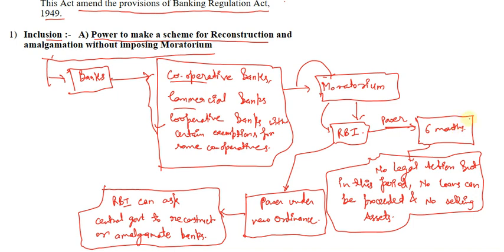There is a certain period which is six months immediately after the moratorium has been imposed on some banks. In that period, no legal action can be taken, but there are certain conditions that have been imposed on the banks.